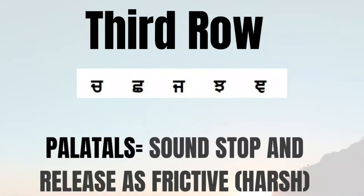The consonants in the third row are known as laterals or affricates because when the consonants are pronounced, the sound is released and stopped as a fricative. These consonants are also known as chavrag toli in the Punjabi Gurmukhi script.